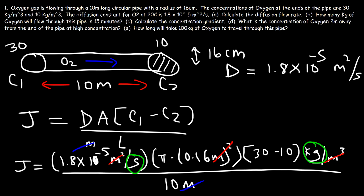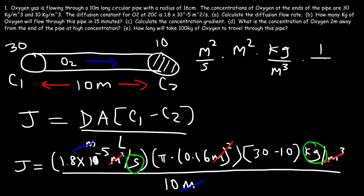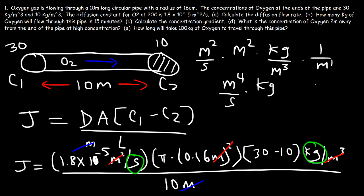For those who might find that confusing, here's another way to see it. D has units of square meters per second, area is square meters, concentration is kilograms per cubic meter, and length in the denominator is one over meters. Square meters times square meters gives meters to the fourth power on top. On the bottom, meters cubed times meters to the first is meters to the fourth. Those cancel, leaving kilograms per second.